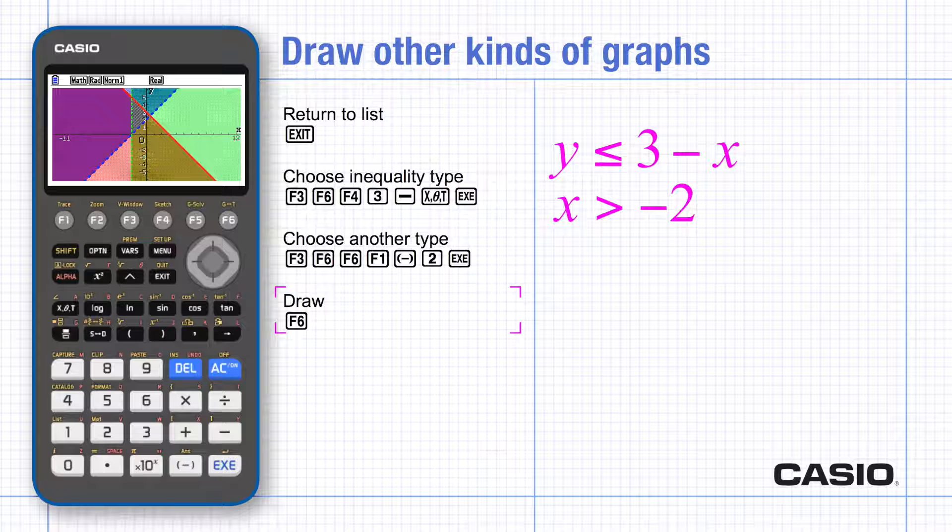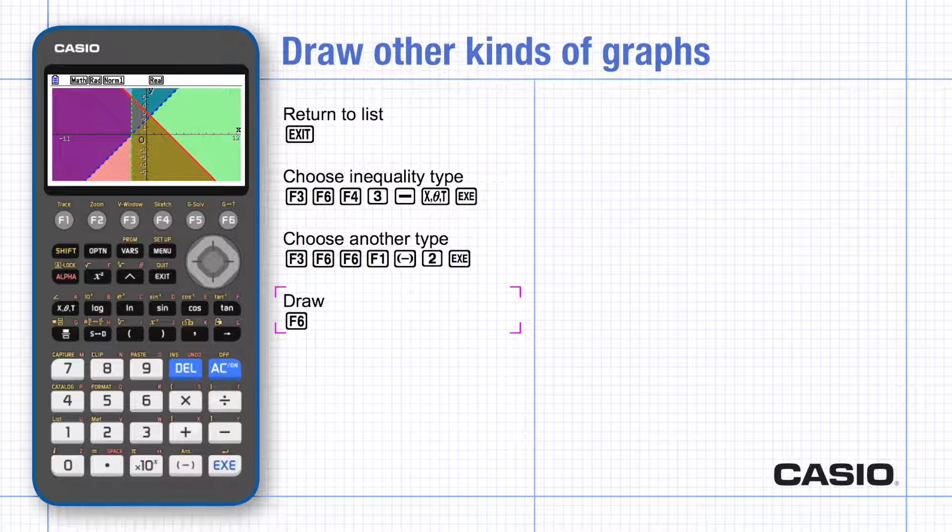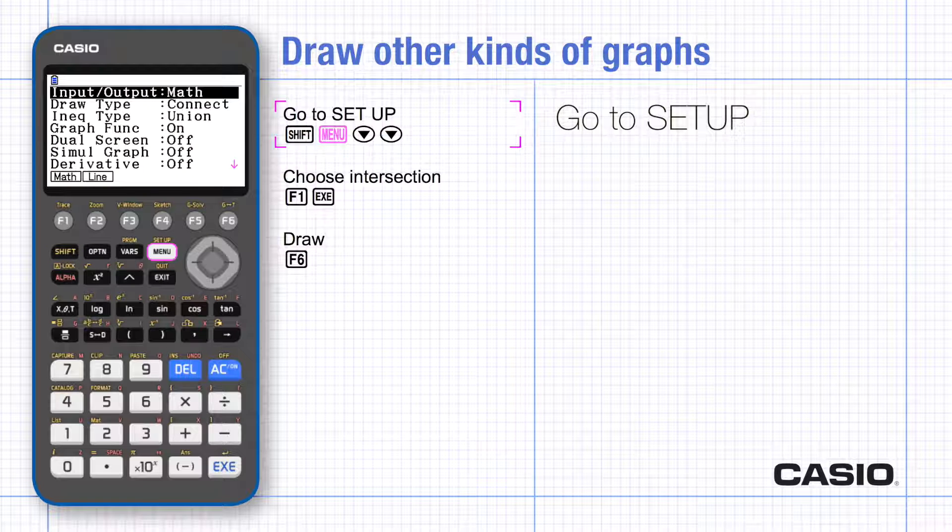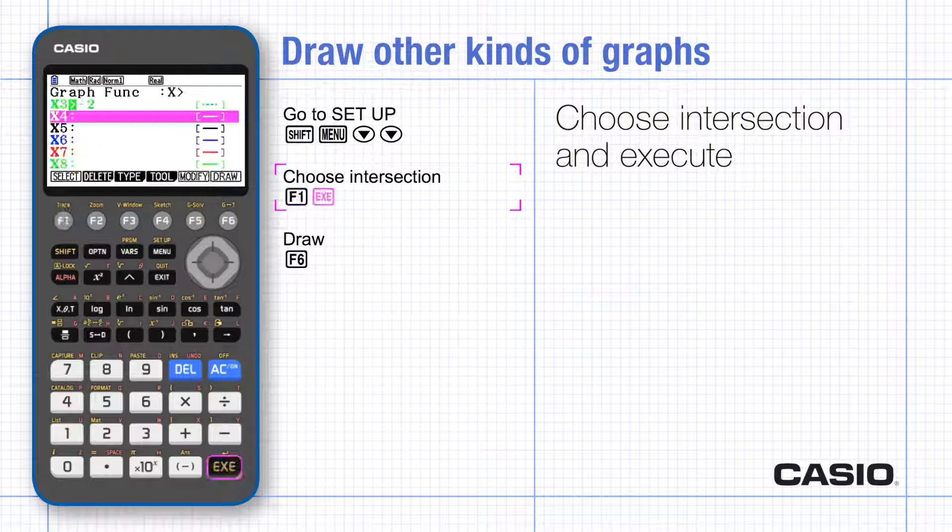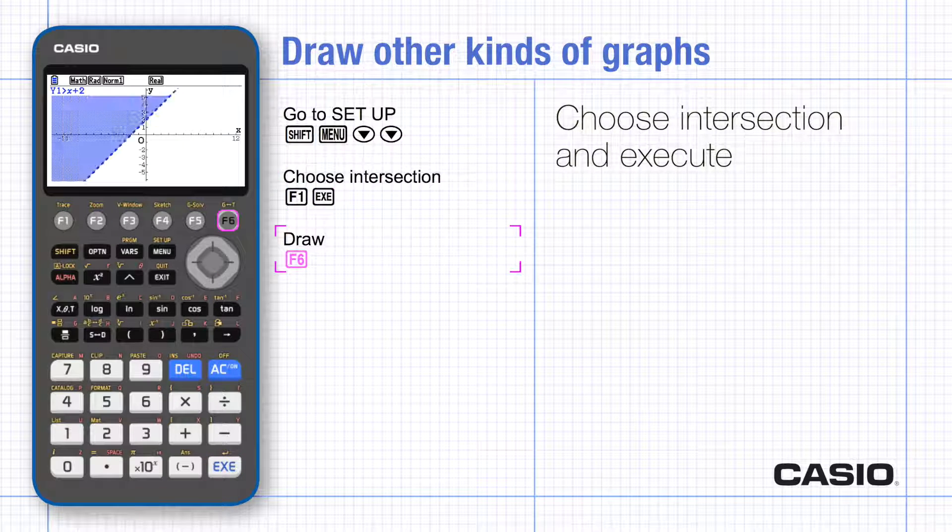If you prefer to see the feasible region which satisfies all three equations at the same time, go to set up and scroll down. Choose intersection and then execute.